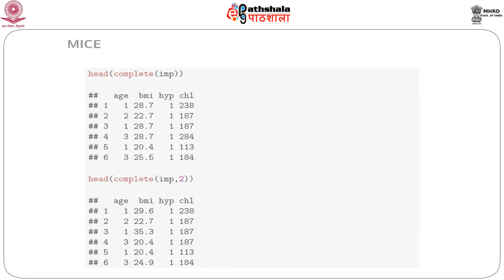The complete data is combined over the observed and the imputed data. The first completed dataset can be obtained by calling complete(IMP). Using the head() command to show only the first six observations, this gives the first imputed dataset. If one wants the second imputed dataset, one can use complete(IMP, 2). We see that in both imputations the imputed values are varying.